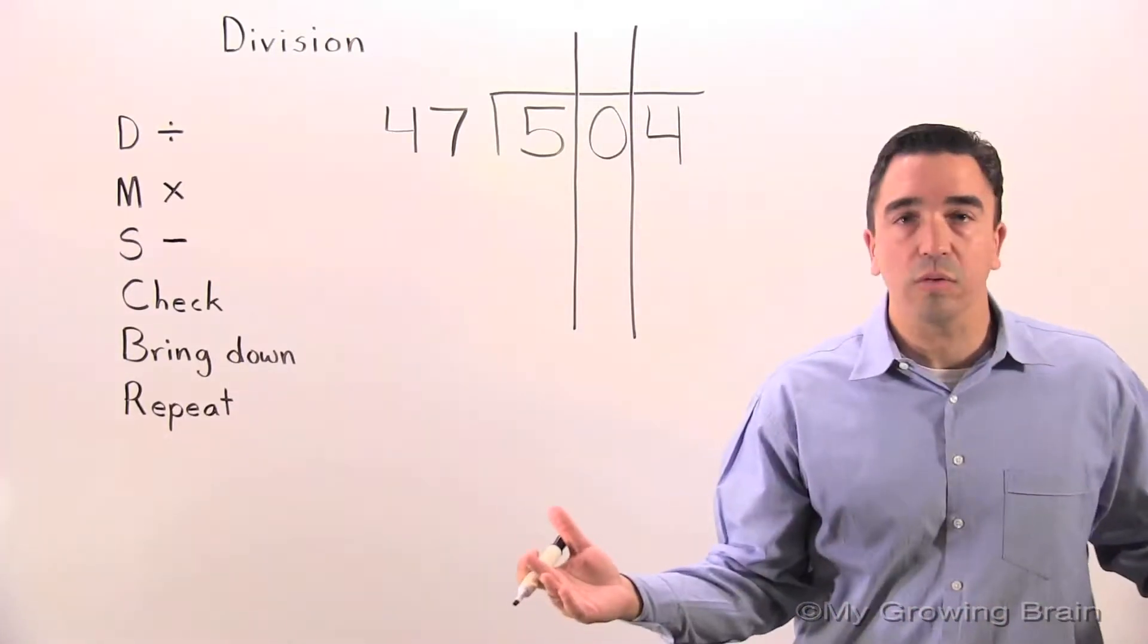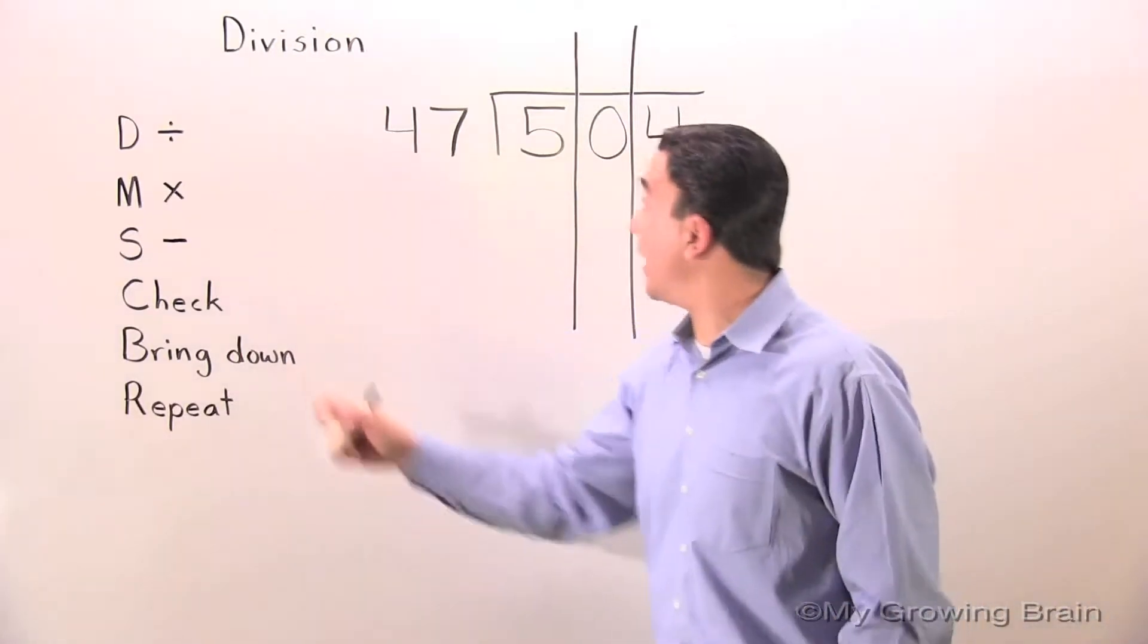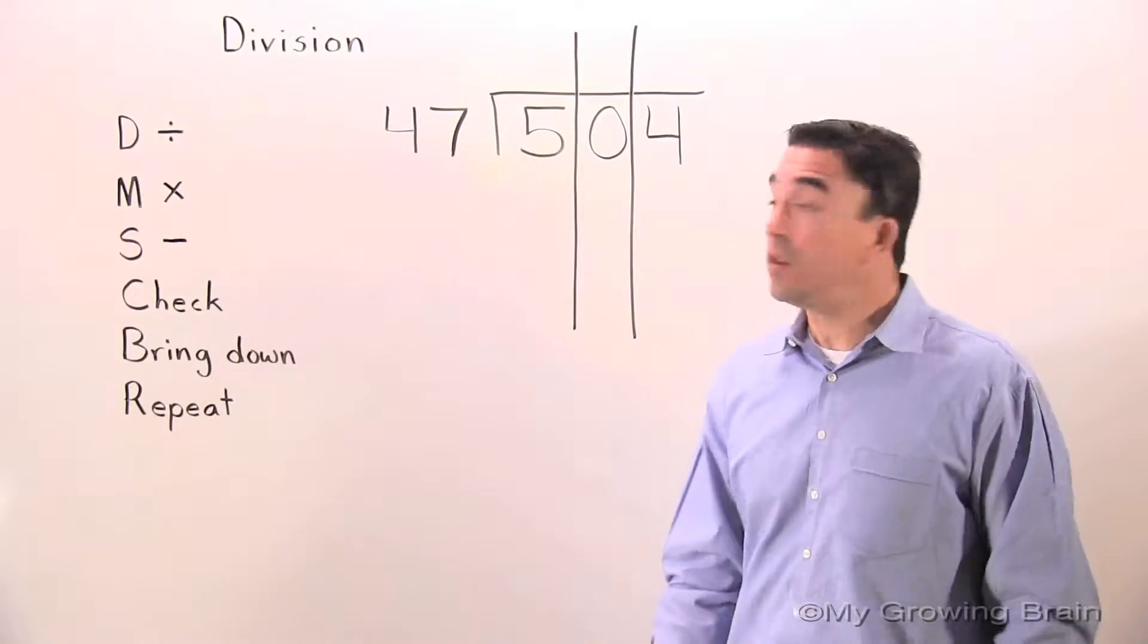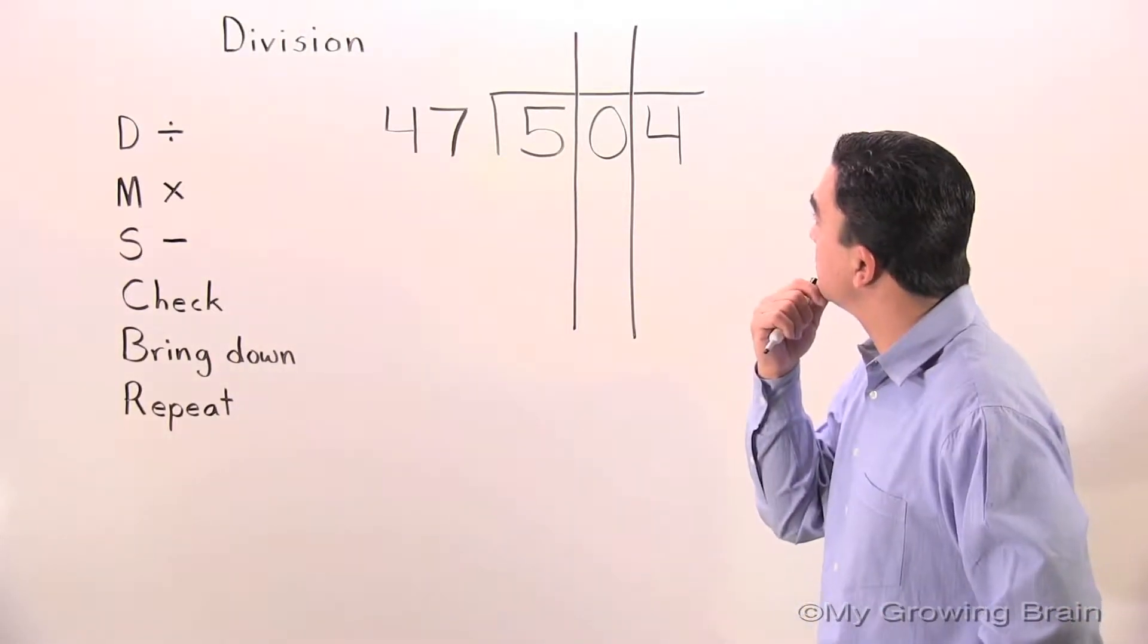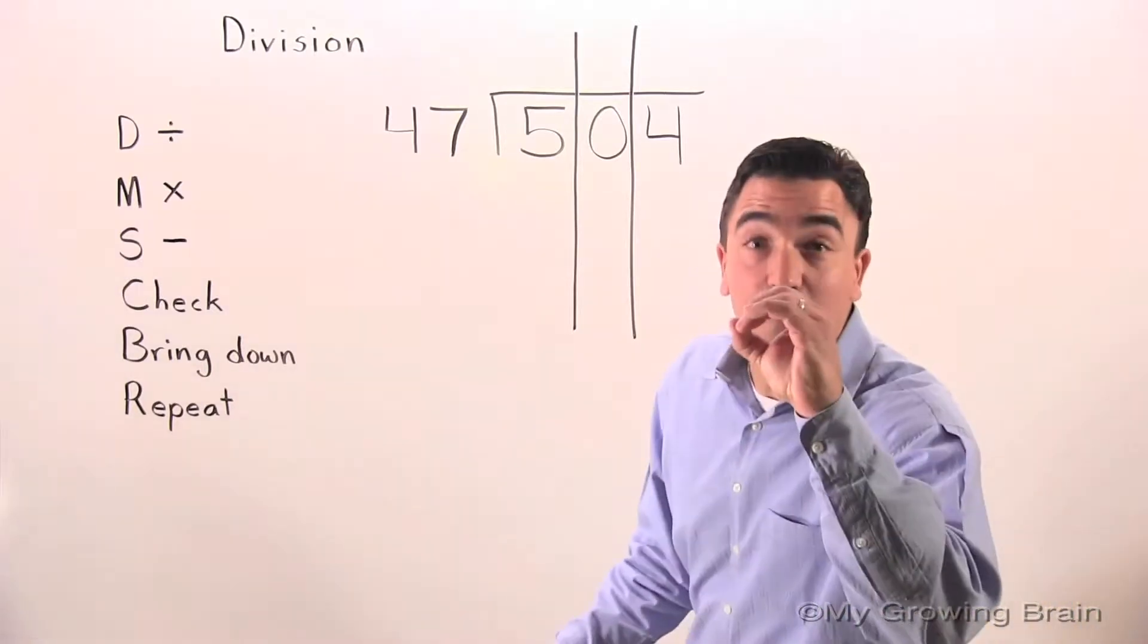We're ready to go. First step, divide. 5 divided by 47 or 47 into 5. Can't do it. Use a zero.